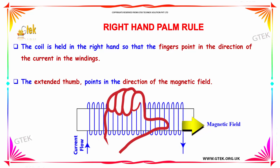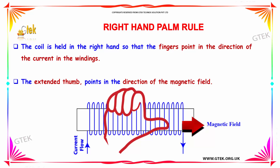Now we'll talk about the right hand palm rule. This is your right hand. Based on the right hand palm rule, the coil is held in the right hand so that the fingers point to the direction of the current in the windings. The extended thumb indicates the magnetic field.